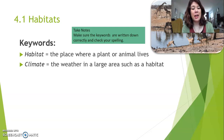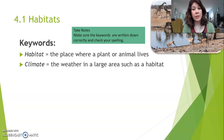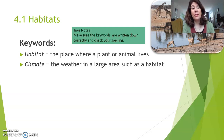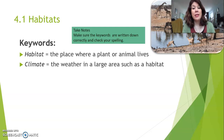The two vocabulary words are Habitat and Climate. A habitat is a place where a plant or animal lives — that could be a forest, a desert, or the ocean. Climate is the weather in a large area, such as a habitat. So it's not just the weather in Hofdorp, but the weather in a very large area, like the climate in Europe or Africa.